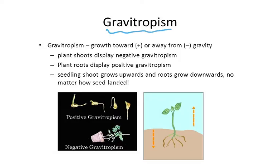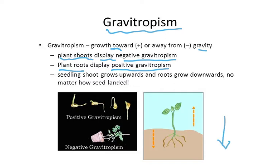As you look at the word gravitropism — gravitropism relates to gravity. If a plant grows towards gravity, plant roots display positive gravitropism. If it grows away, plant shoots display negative gravitropism. The roots, as you know, grow towards gravity; they will grow into the soil, while the shoots grow away from gravity.